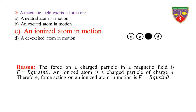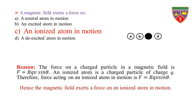Reason: The force on a charged particle in a magnetic field is F = BQV sinθ. An ionized atom is a charged particle of charge Q. Therefore, the force acting on an ionized atom in motion is F = BQV sinθ. All other options consist of neutral atoms. Hence, the magnetic field exerts a force on an ionized atom in motion.